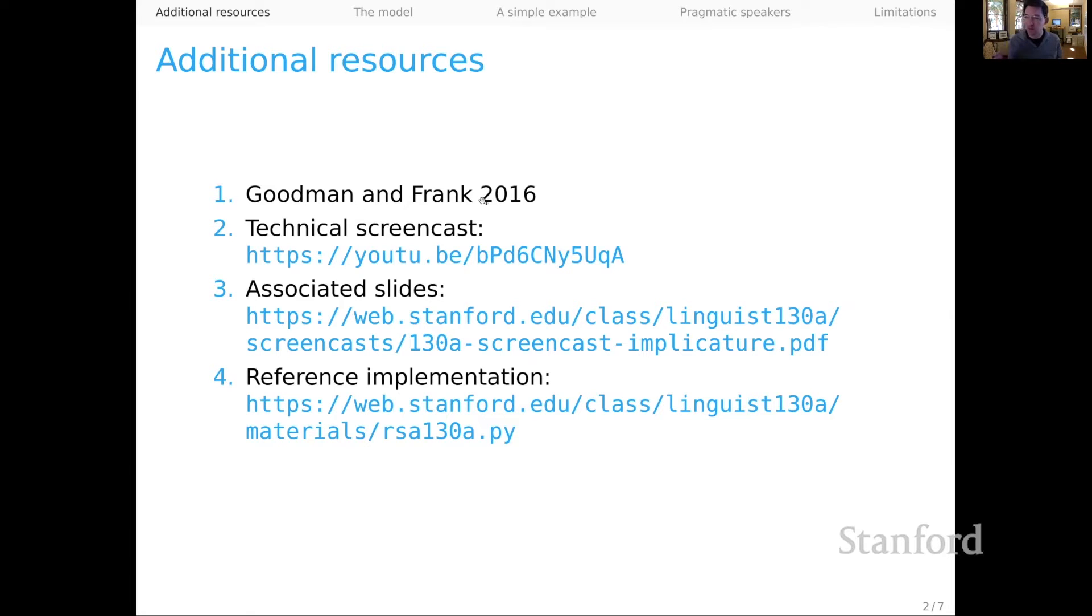So this first paper, Goodman and Frank from the developers of RSA, is a nice overview that shows not only all the technical model details with real rigor, but also connects the ideas with decision theory, game theory, cognitive psychology, and Bayesian cognitive science, and also linguistics. From there, you could watch this technical screencast that I did. This is on YouTube, and here are the associated slides for that if you want to follow along. And from there, I have this Python reference implementation of the core RSA model, and that would be a great way to get hands-on with the model and begin to think about how you could incorporate it into your own project or original system.